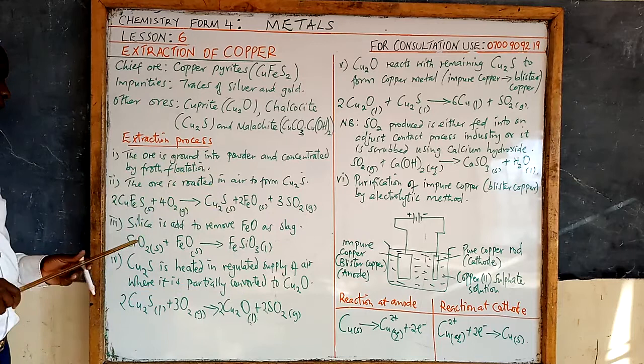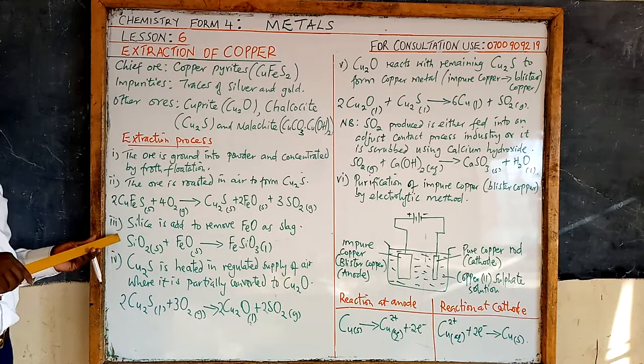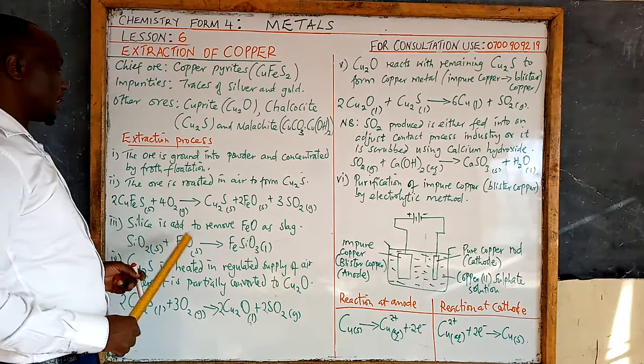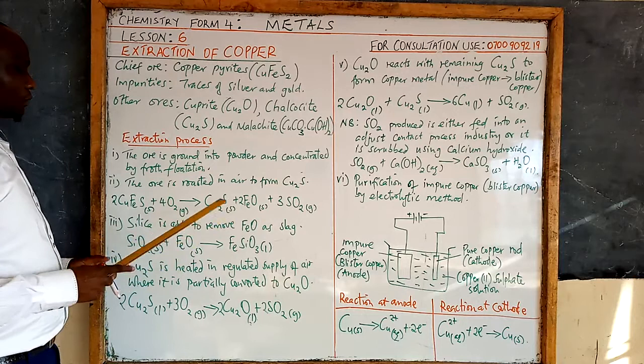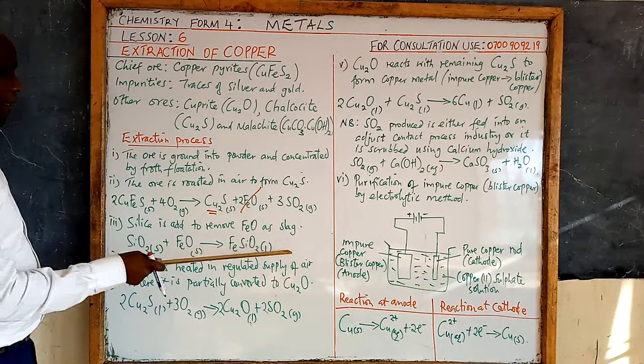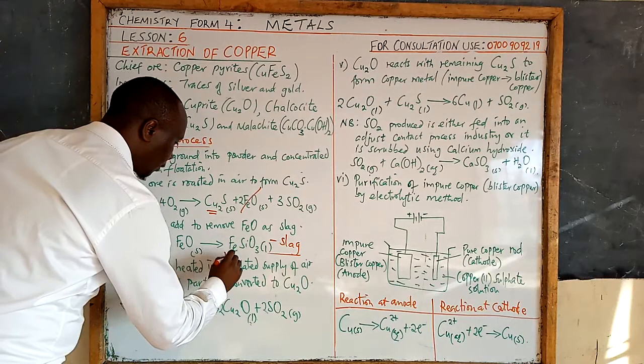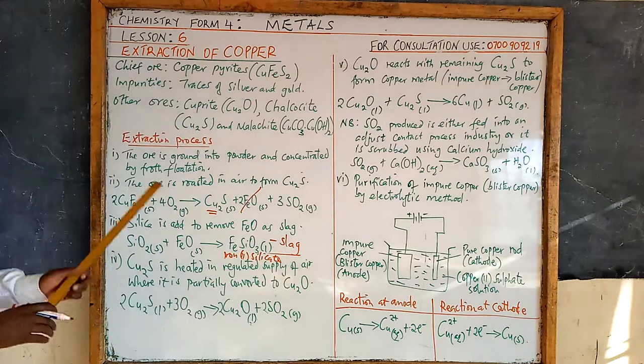Step three: silica is added. Interestingly, silica has been an impurity in iron, aluminium, zinc, and lead. But here for copper, silica is not an impurity — in fact, it is added into the ore. The function of adding silica is to remove the iron(II) oxide, which comes out as iron(II) silicate in the slag.